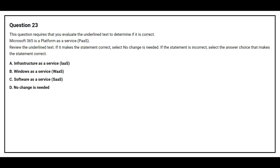Option A: Infrastructure as a Service. Option B: Windows as a Service. Option C: Software as a Service. Option D: No change is needed. The correct answer is Option C, Software as a Service.